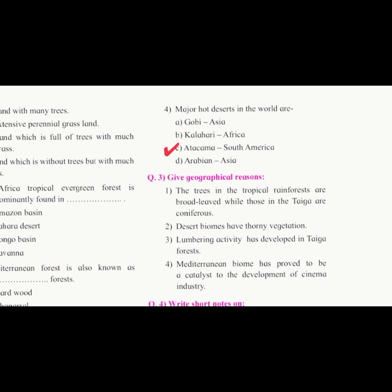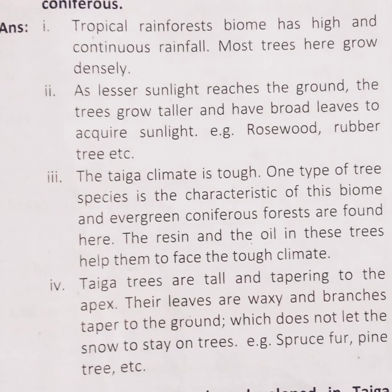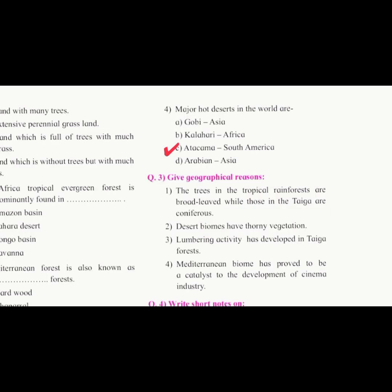Question 3: give geographical reasons. First: the trees in the tropical rainforest are broad-leaved while those in the taiga are coniferous. Second: desert biomes have thorny vegetation.